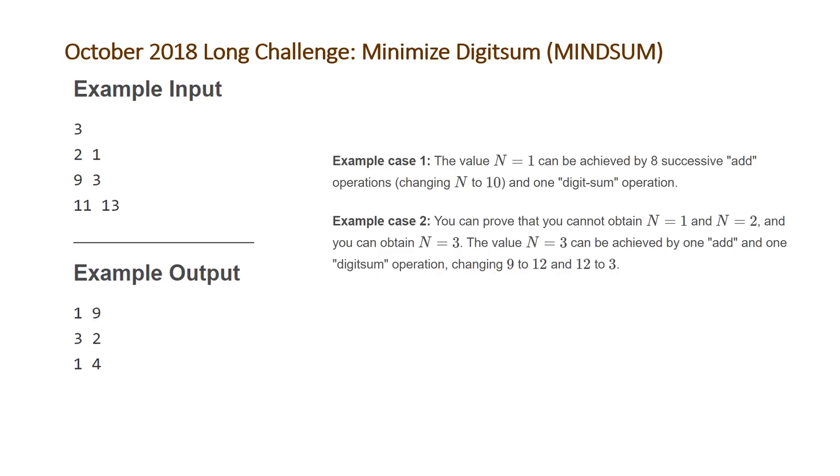And for the third example, we have n equal to 11 and d equal to 13, and the explanation is as follows. n equals 1 can be achieved by the operations add, add, and digit sum, digit sum, which will give us in order 11 to 24, 24 to 37, and then 10 to 1.